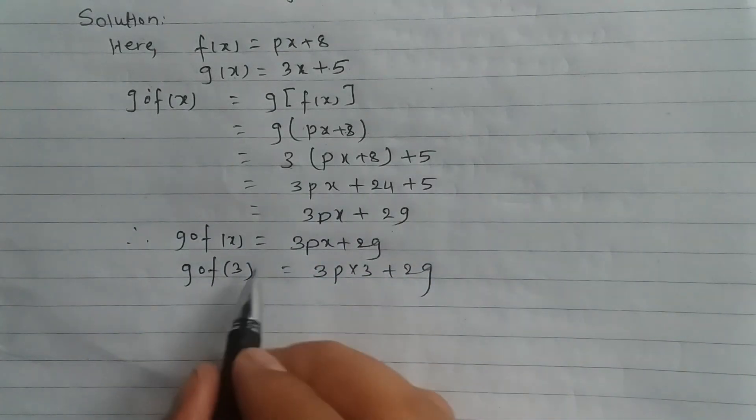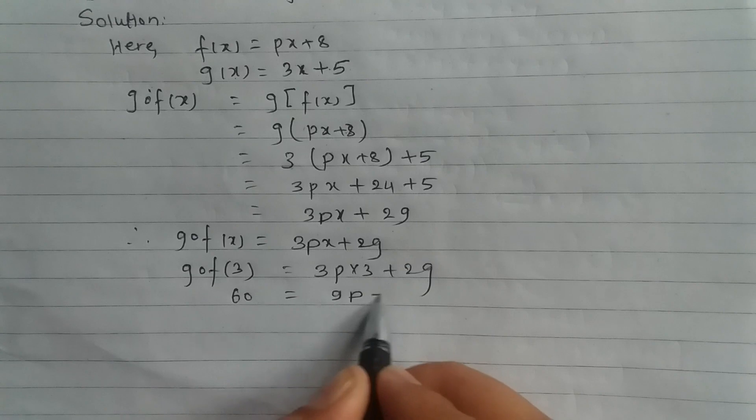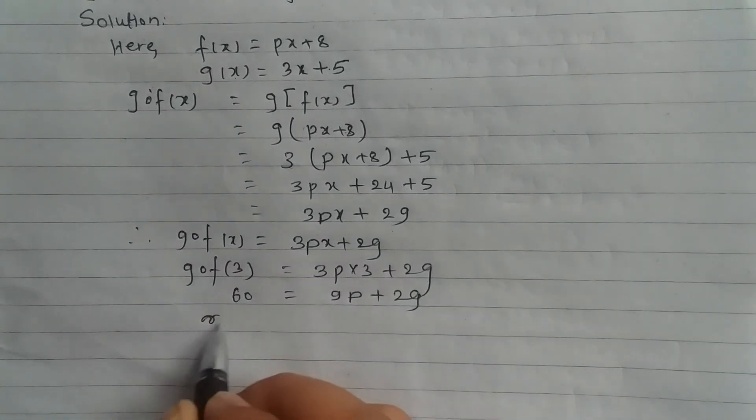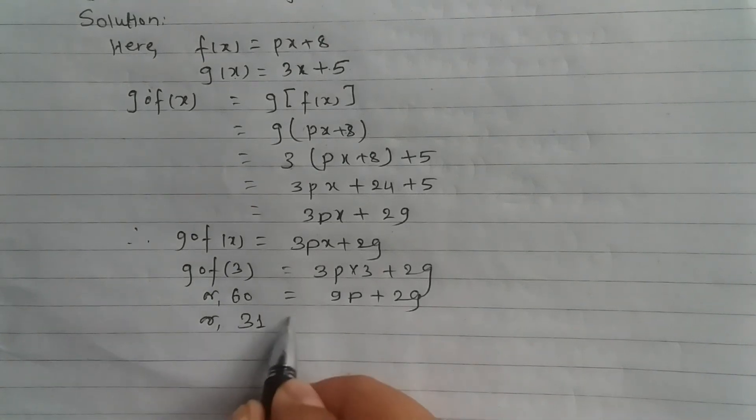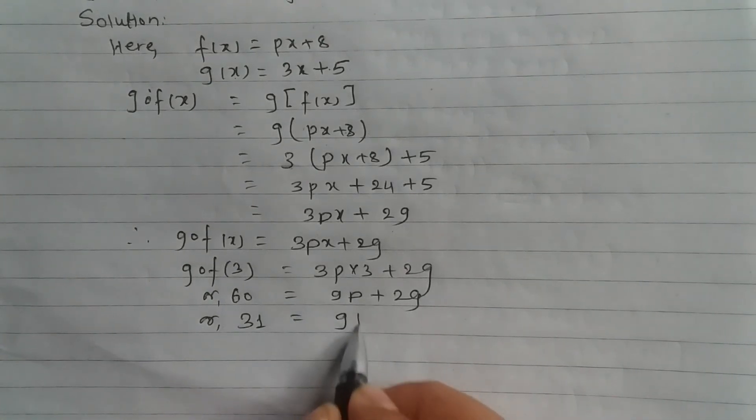Given that g composite f(3) = 60, we have 9p + 29 = 60. Therefore, 60 - 29 = 31 = 9p.